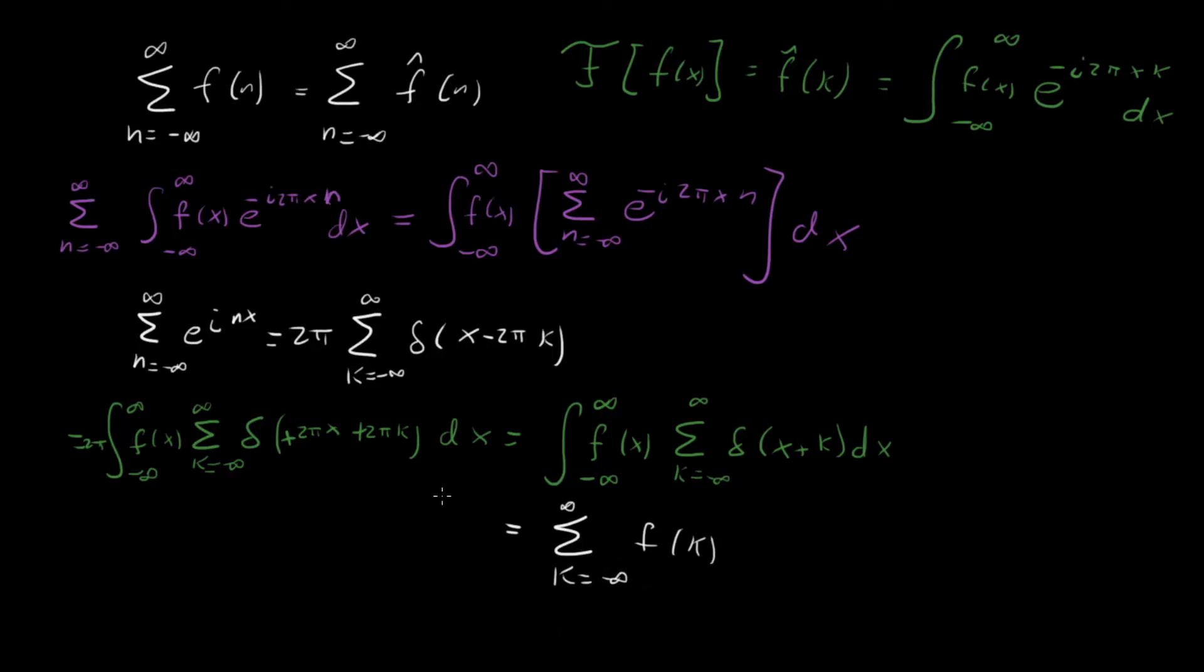But we've done it, right? What we've shown is that starting from this term right here, the sum of the Fourier transform, doing a little bit of math and knowing this fact about the delta function in Fourier series, we were able to show that we can rewrite this whole thing as a sum of infinitely many delta functions, which becomes exactly this term on the left hand side. And so we've proven the Poisson summation formula.